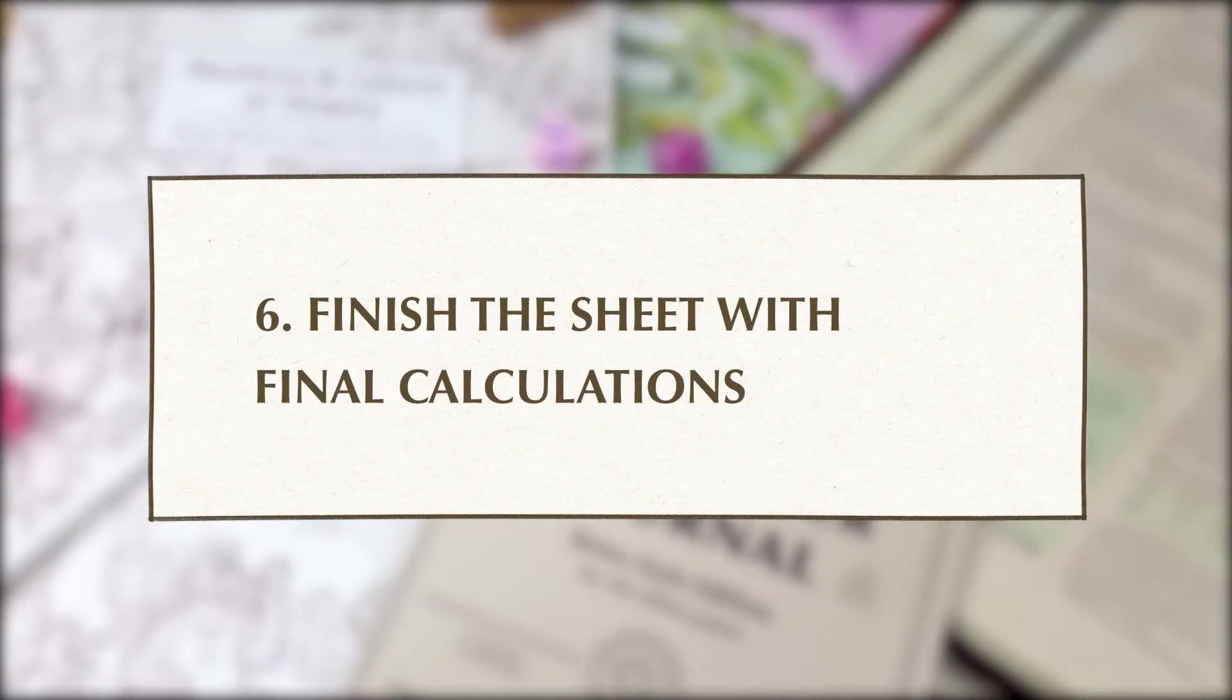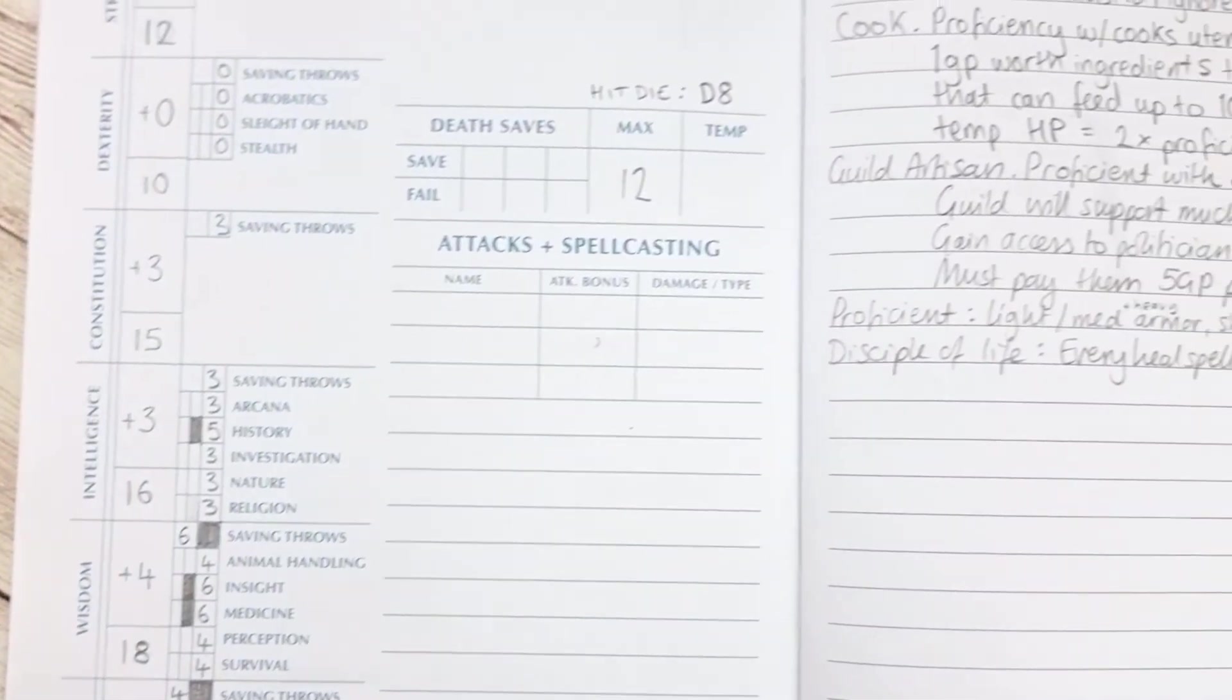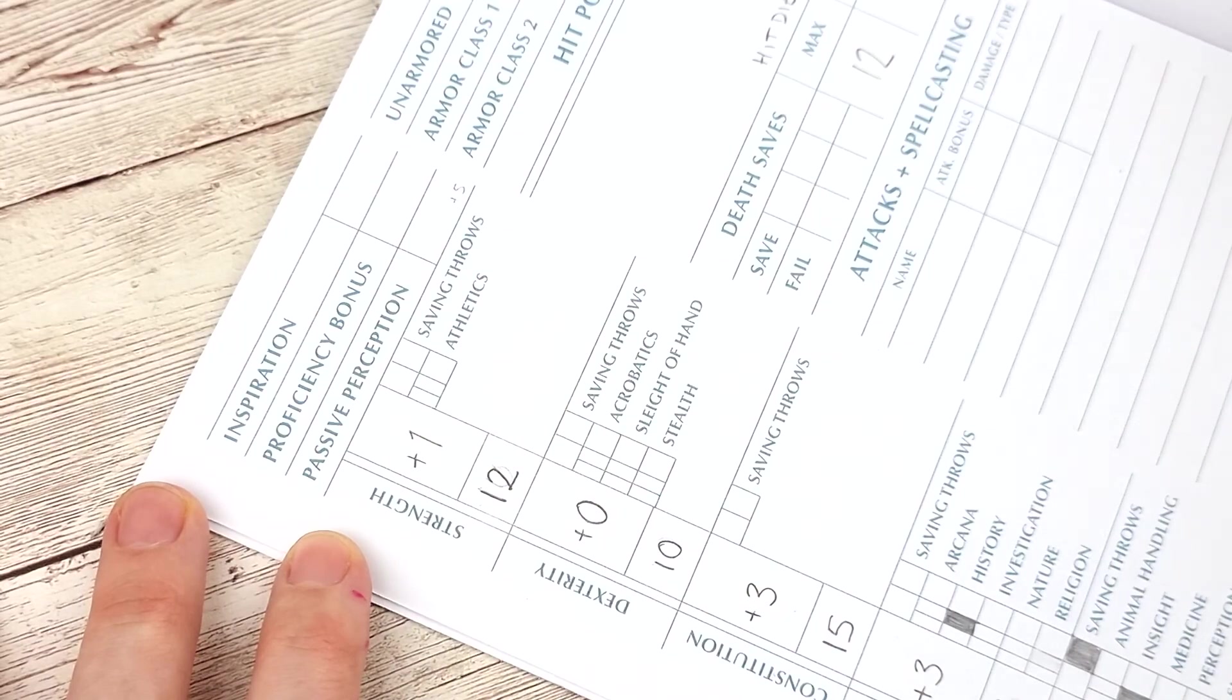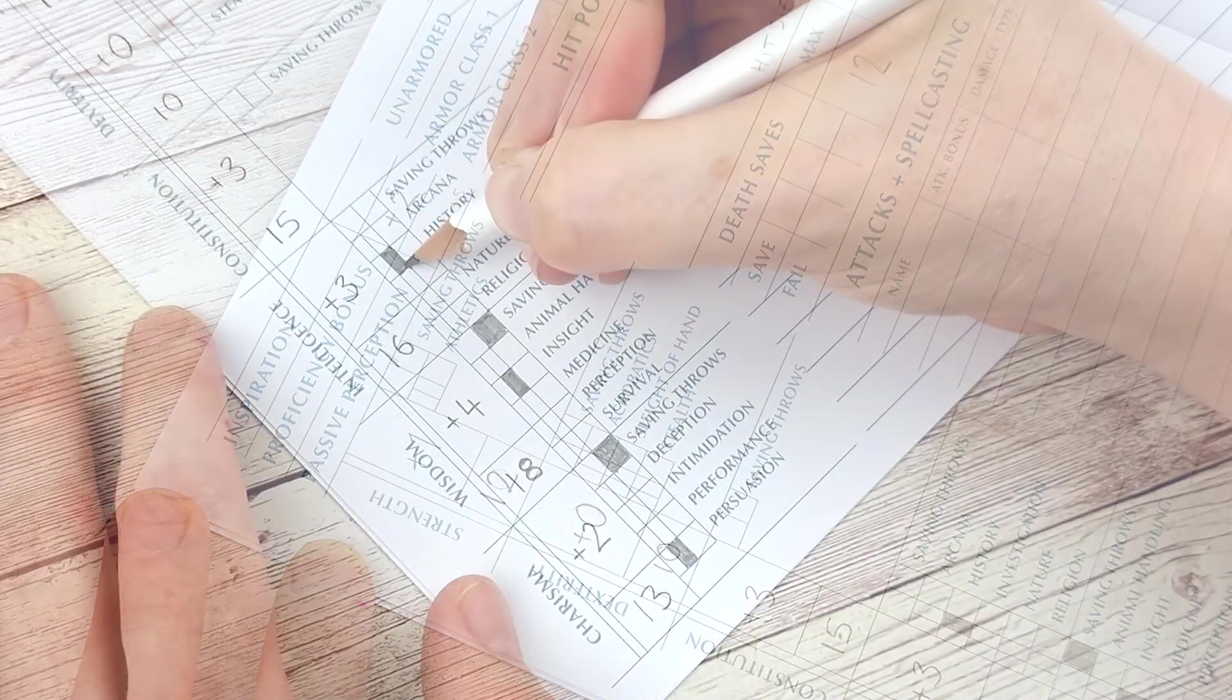We're nearly finished. Now that you have all of your ability score modifiers and skill proficiencies in place you can determine all of your skill bonuses plus a few other features. We start with your proficiency bonus. You should be able to find this in your class information. For a first-level character it's plus two.